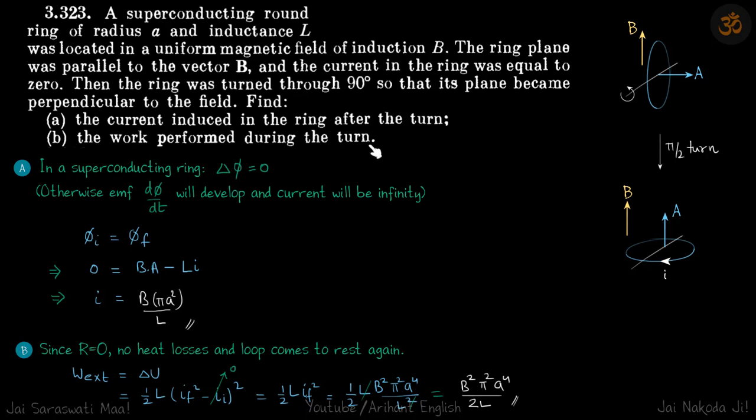Work performed during the turn. So since the resistance in this loop is zero, there is no heat loss. And because loop starts from rest and comes to rest again, there is no change in kinetic energy either. So all the work external is used in gaining of potential energy of this loop. And potential energy is half LI². So half L(I_final² minus I_initial²).